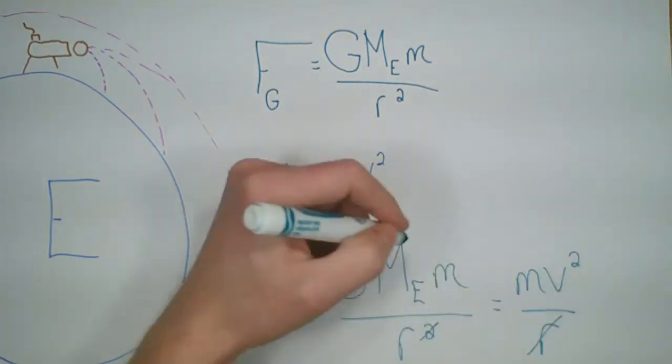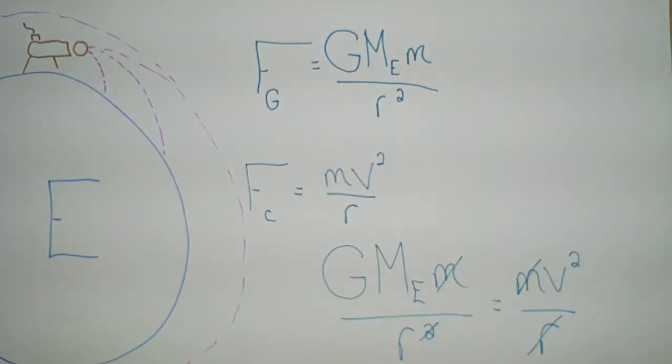we see that we have G mass of the Earth, mass of the object over R squared, equals mass of the object multiplied by the speed squared over R, which simplifies down,